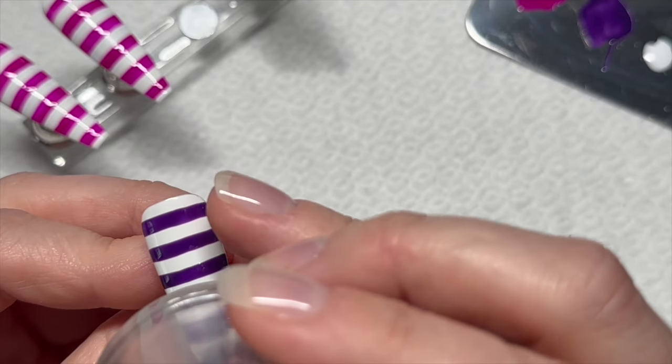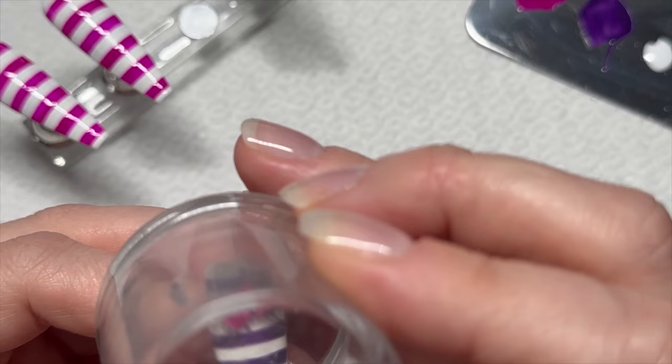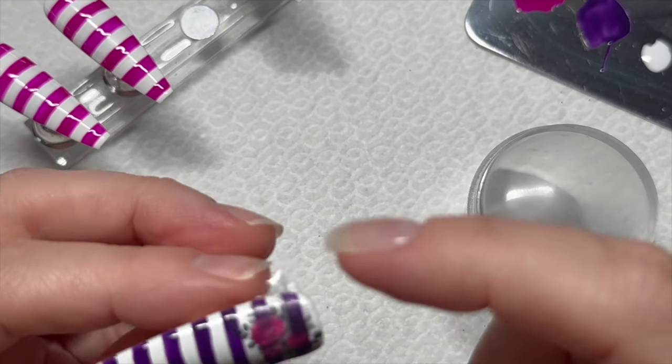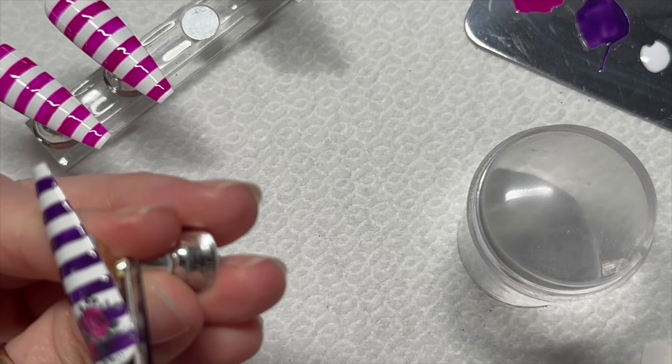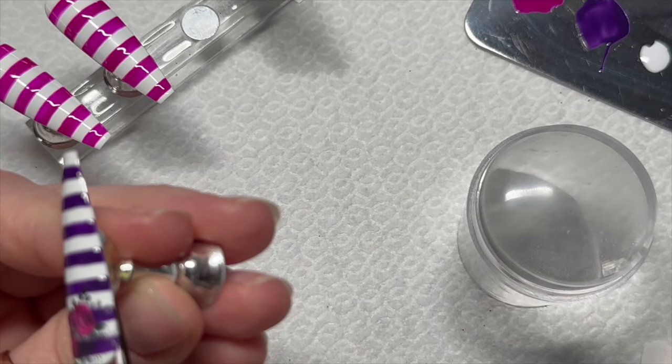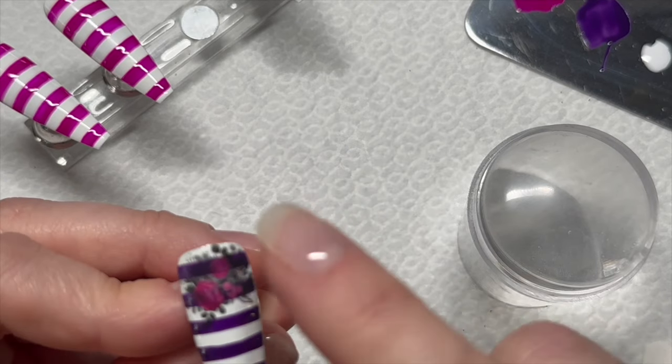Now when I stamp this on, the flowers are going to look all even. Do you see what I mean? If I'd have left it, the flowers would have been darker where the stripes are. I'm going to cut off the excess, and then that one is done.